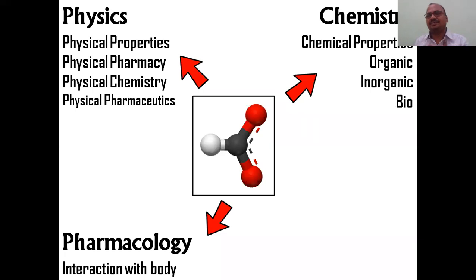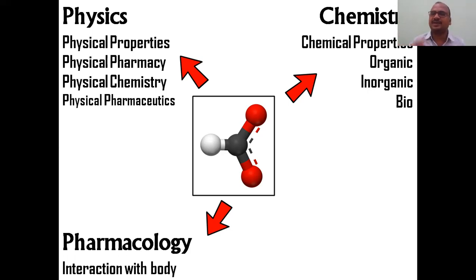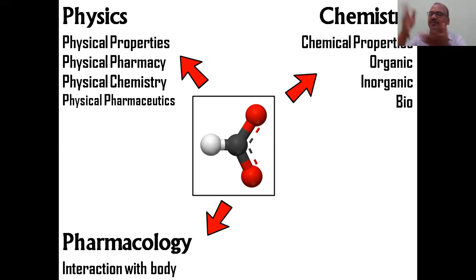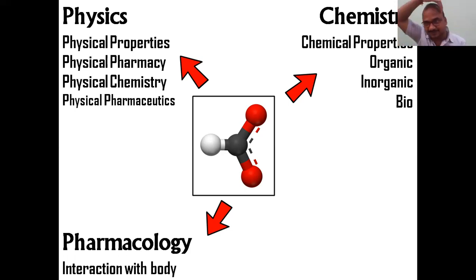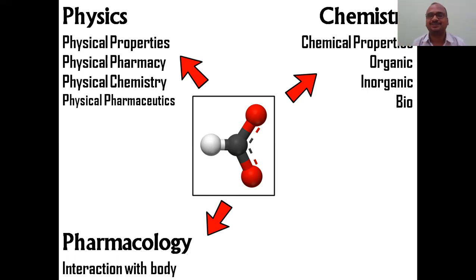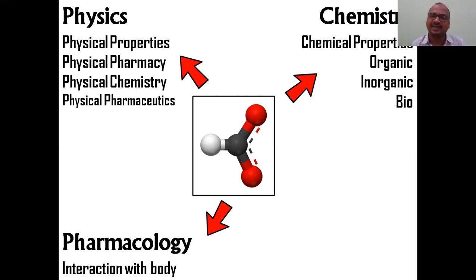Any drug molecule has three types of properties. Just like humans have three types of properties — mobile property (money, gold, which can be moved from place to place), immobile property (house, land), and intellectual property — in the same fashion, a drug molecule also has three properties.